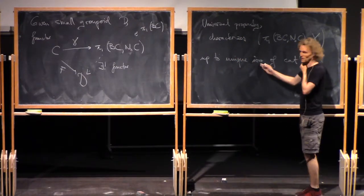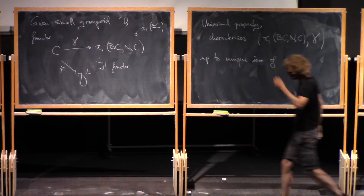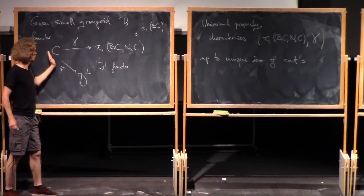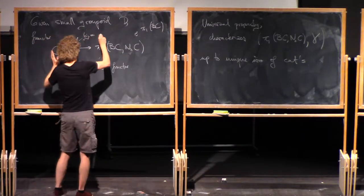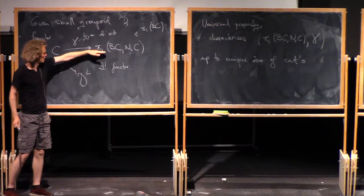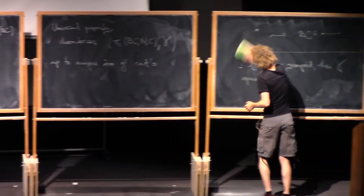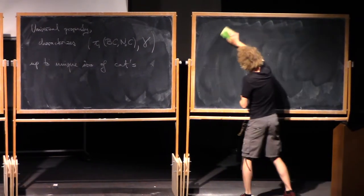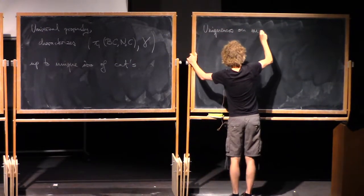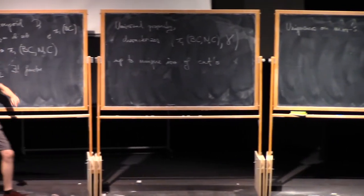If you don't like characterizing categories up to isomorphism, you can find another universal property that characterizes it up to equivalence of categories. The proof is easy. First of all, these two have the same object set — this is a bijection on object sets — so this thing is uniquely given on objects. For morphisms: what do morphisms in the fundamental groupoid of the classifying space look like?